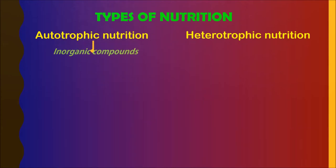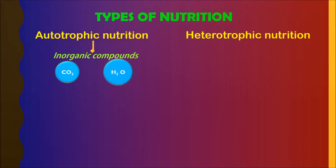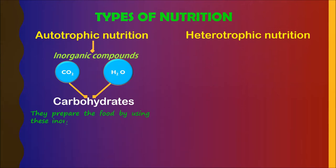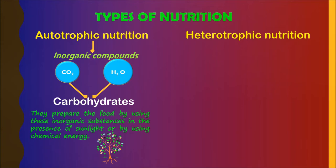Autotrophic nutrition utilizes inorganic compounds such as carbon dioxide, water molecules, etc. to produce carbohydrates. The organisms with mode of autotrophic nutrition prepare the food by using these inorganic substances in the presence of sunlight or by using chemical energy. The examples are green plants.